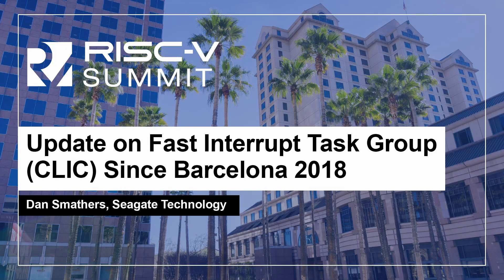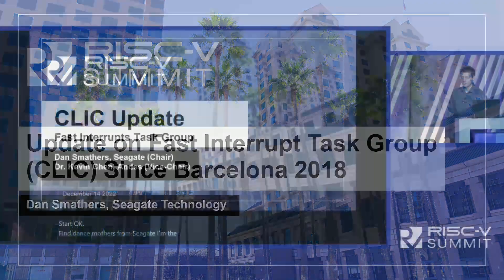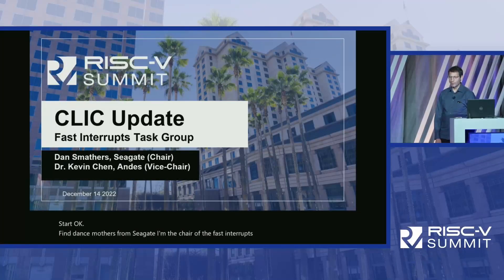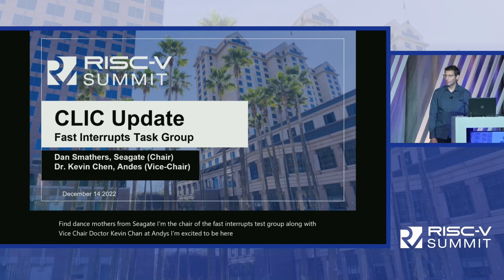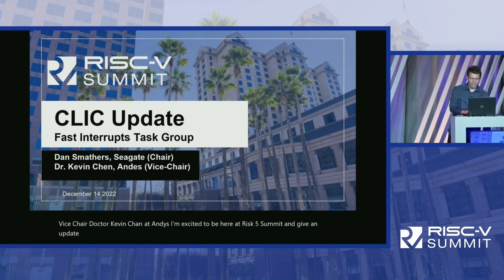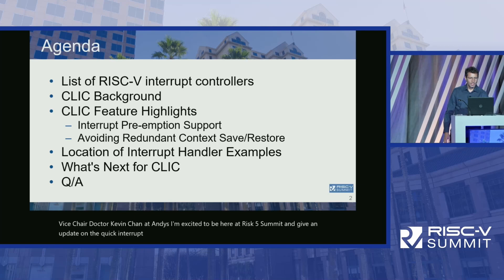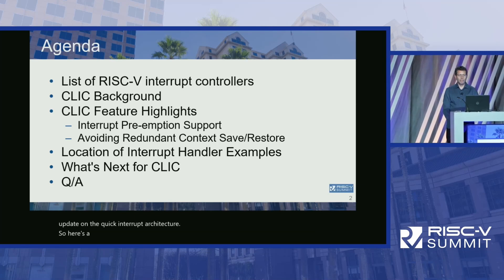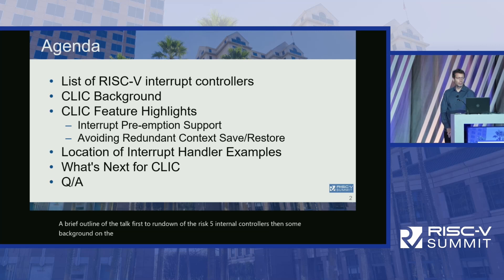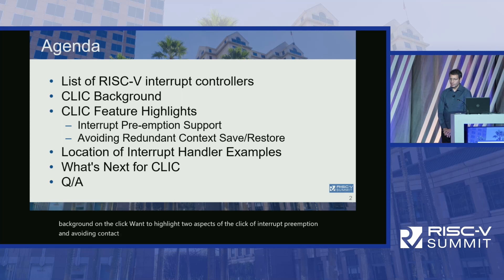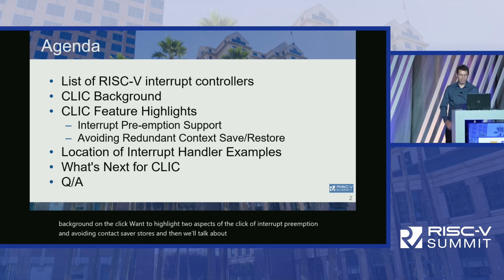Hi, I'm Dan Smathers from Seagate. I'm the chair of the Fast Interrupts Task Group, along with Vice Chair Dr. Kevin Chen of Andes. I'm excited to be here at the RISC-V Summit and give an update on the CLIC interrupt architecture. Here's a brief outline of the talk: first a rundown of the RISC-V interrupt controllers, then some background on the CLIC. I want to highlight two aspects — interrupt preemption and avoiding context save/restores — and then we'll talk about what's next for CLIC and its path to ratification.